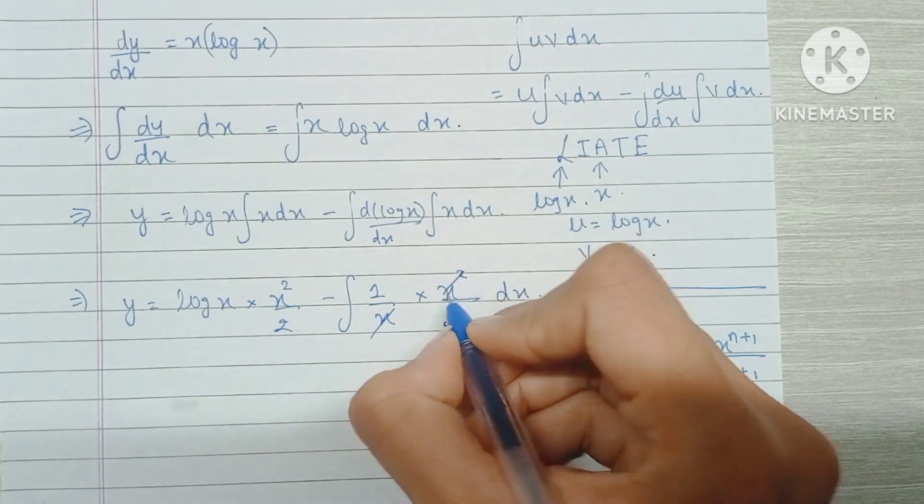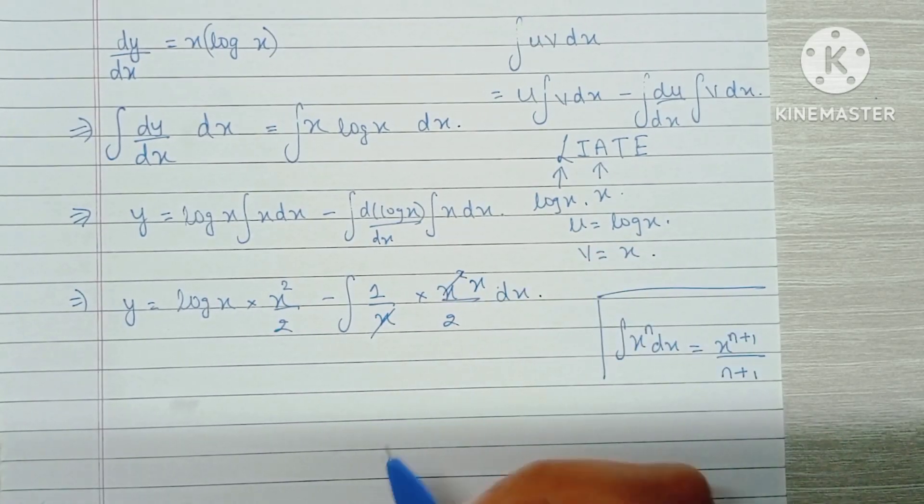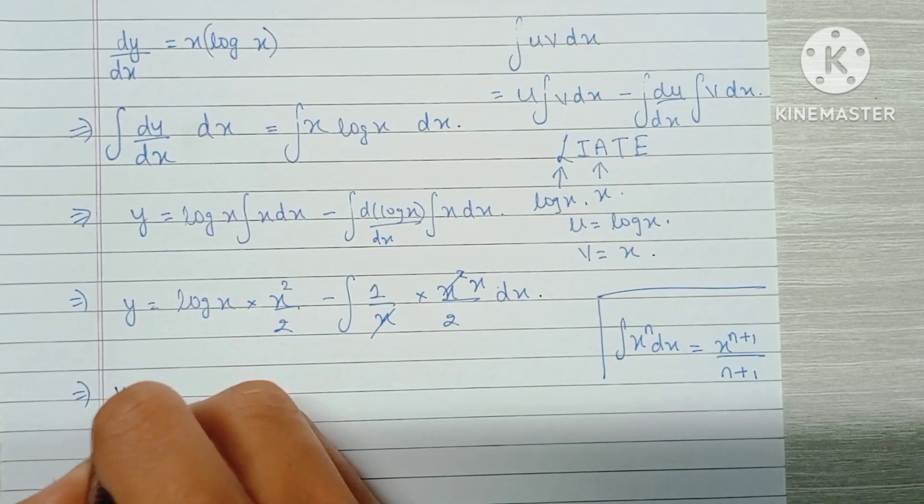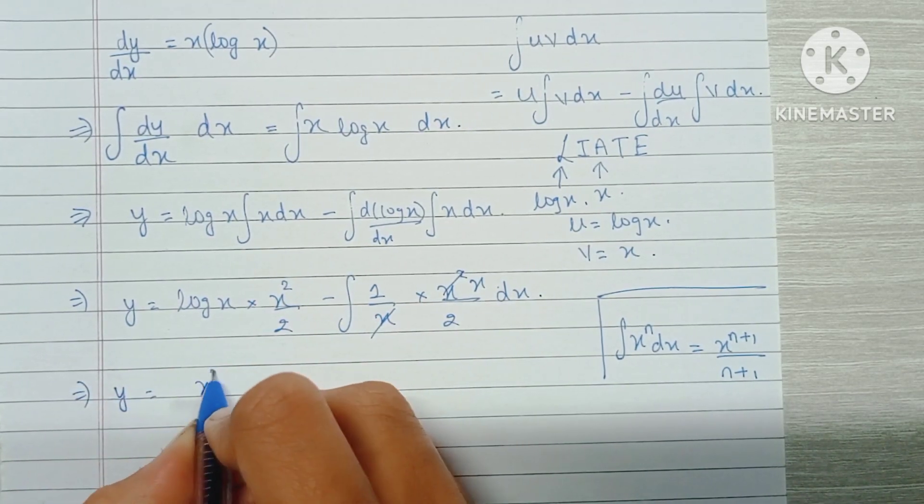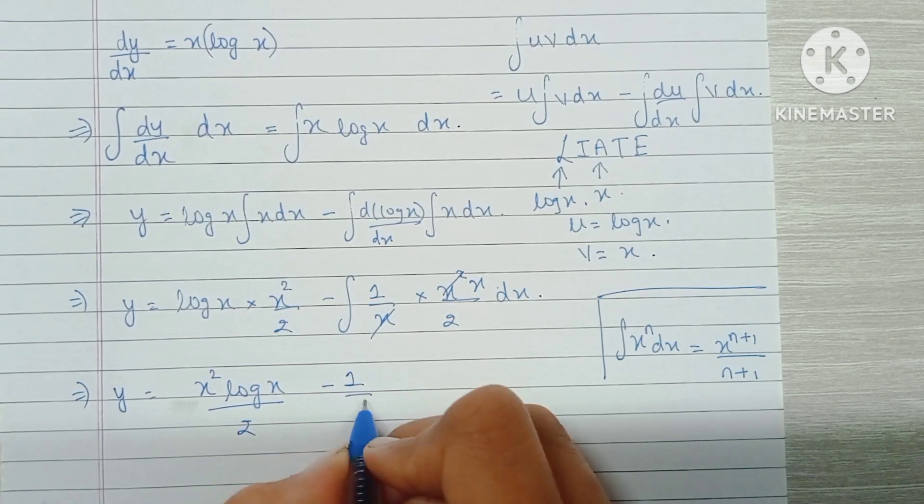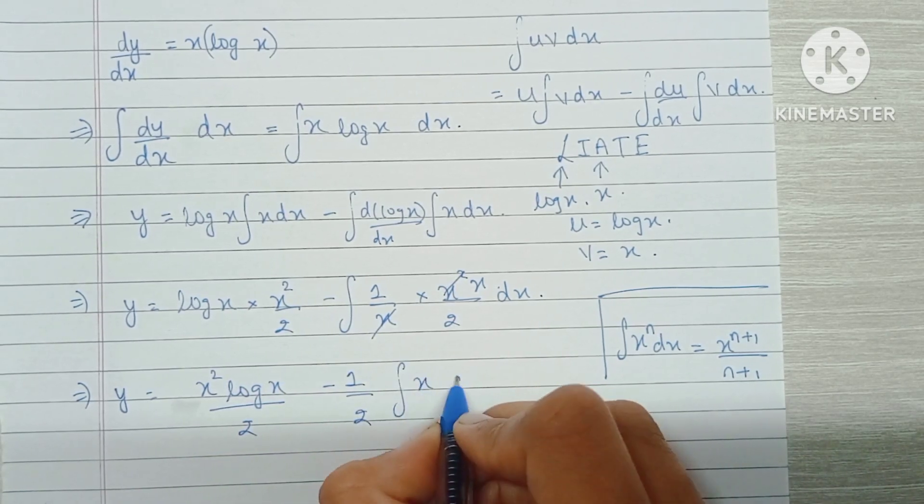So there is one x which gets cancelled and we can take 1/2 outside the integral sign, so we have y equals x² log x over 2 minus 1/2 times the integration of x dx.